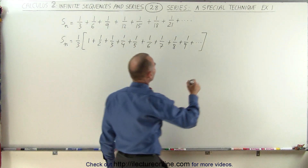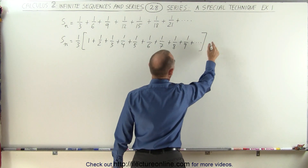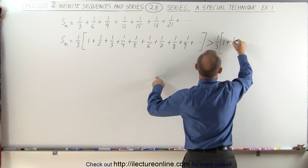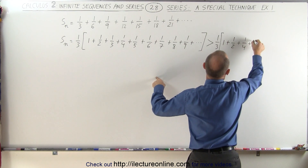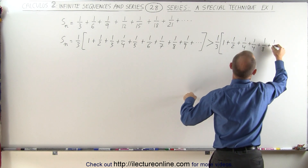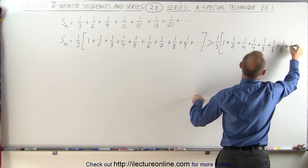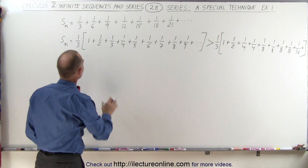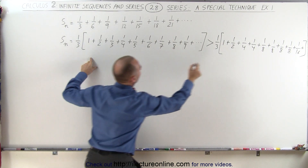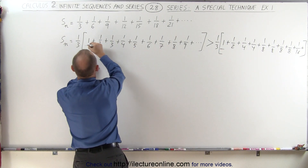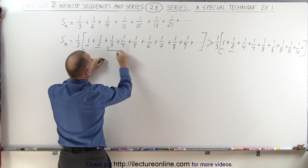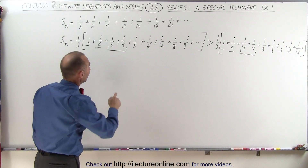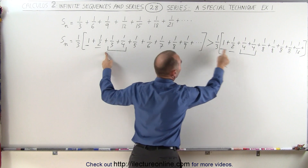We can say this is going to be greater than one-third times the following summation: 1 plus one-half plus one-quarter plus one-quarter plus one-eighth plus one-eighth plus one-eighth plus one-eighth plus one-sixteenth, and so forth. Over here we have a one and over here we have a one. Then here we have one-half and here we have one-half. The next two terms, one over three plus one over four, are replaced by one over four plus one over four. Since one-third is bigger than one-fourth, this must be larger.